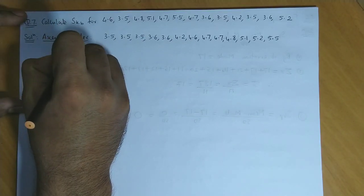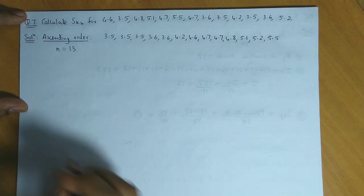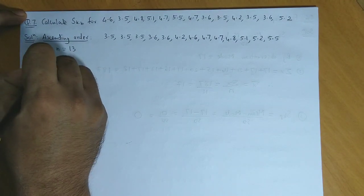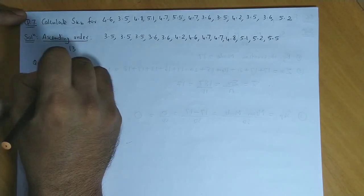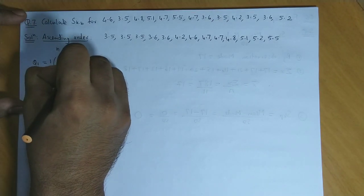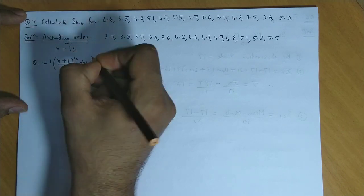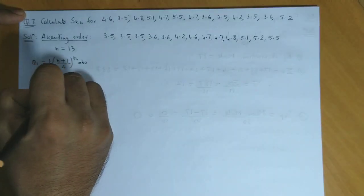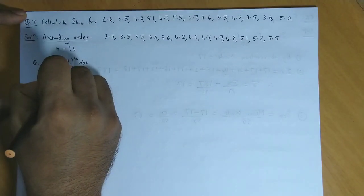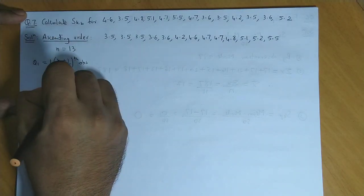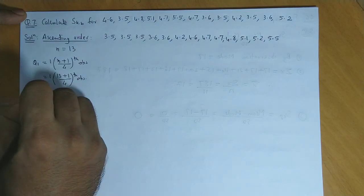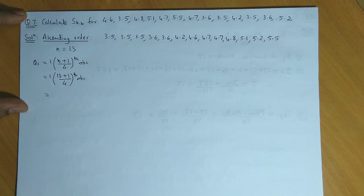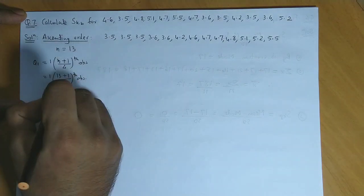So number of observations here is 13. So first we calculate Q1 as 1 into n plus 1 by 4th observation. So let us substitute, 1 into 13 plus 1 upon 4 observation. Now 13 plus 1 that is 14 divided by 4 is 3.5.